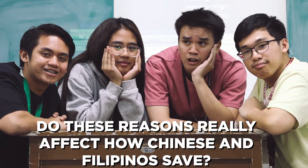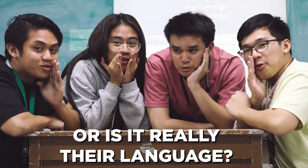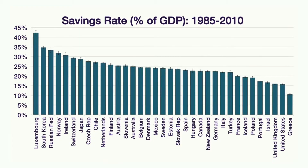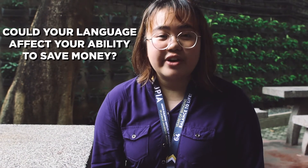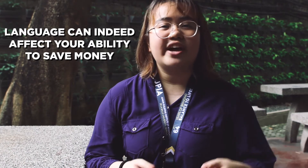So, do these reasons really have an effect on how Chinese and Filipinos save? Or is it really their language? On the left of this graph, you can see that many OECD countries are saving over a quarter of their GDP every year, and some saving over a third. All the way to the right is Greece, which over the last 25 years has managed to save more than 10% of their GDP. Now that we see these huge differences in saving rates, according to Keith Chen, how is it possible that language has something to do with these differences? The main question is: could your language affect your ability to save money? In his 2012 TED Talk, Keith Chen claimed a new hypothesis stating that language can indeed affect your ability to save money.